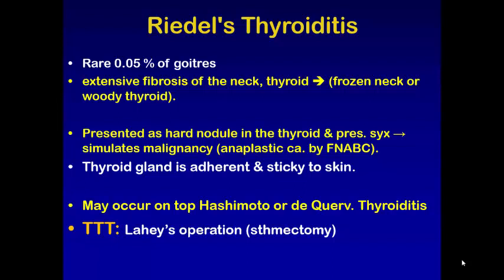Treatment of Riedel's thyroiditis is to relieve the pressure on the trachea by an operation called Lahey's isthmusectomy, which involves removing the isthmus. This relieves pressure from the trachea, and the isthmus specimen is also used for histopathological diagnosis.